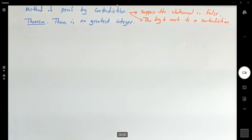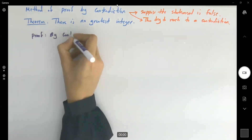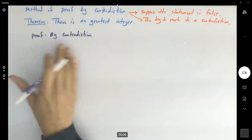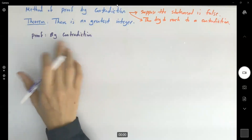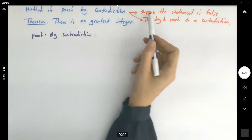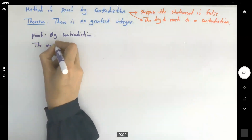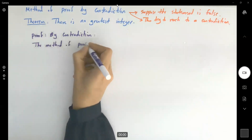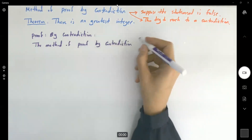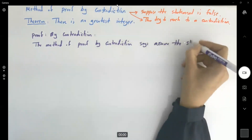Proof by the method of contradiction. When you are proving statements, mention which method you're using. In this proof, I'm going to use the method of contradiction. The method of contradiction says: suppose — this is the very first step — suppose the statement is false.